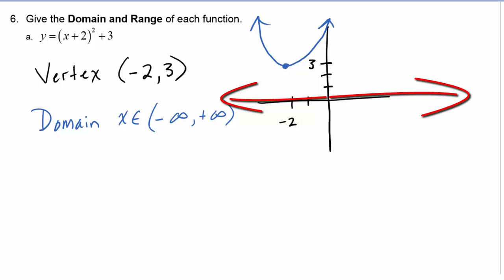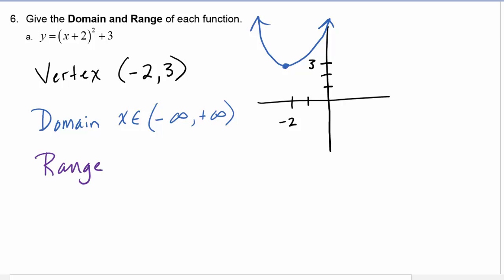Now the range is gotten from the y values. When we look at this graph, we can see that there are no y values below three. The y values begin at three and go up from there, so the range is that y is contained in the interval [3, ∞).